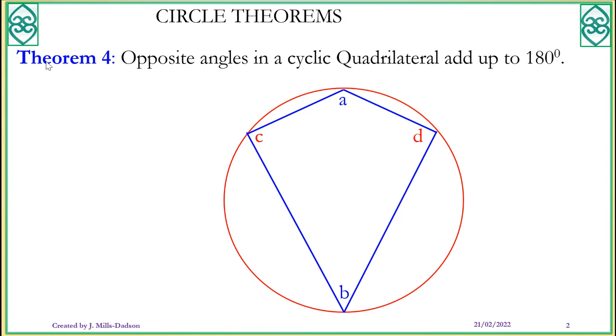We are on number 4 now. Theorem 4 says opposite angles in cyclic quadrilateral add up to 180 degrees. Now first, what is a cyclic quadrilateral? It means a quadrilateral that fits perfectly inside a circle such that all the four corners must touch the circumference. So it doesn't necessarily have to be a square or a rectangle as long as it's four-sided and all the four corners touch the circumference, it becomes a cyclic quadrilateral. And the rule says that opposite angles must always add up to 180. So A plus B must equal 180, C plus D must equal 180. It's as simple as that.